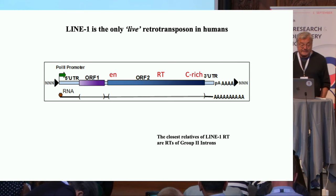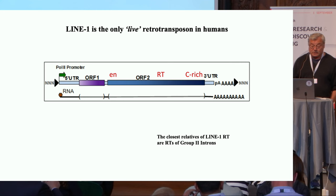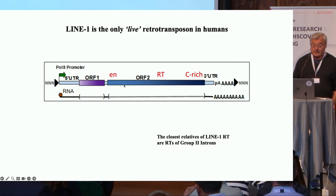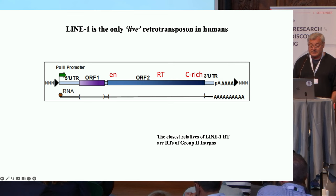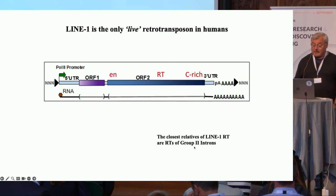This is a LINE element. It doesn't have any LTRs and only encodes two proteins. One of them, ORF-1, is an RNA chaperone. ORF-2 encodes the enzymatic machinery necessary for retrotransposition — the reverse transcriptase and the endonuclease. This is a very primitive element. The closest relatives sequence-wise of the LINE-1 reverse transcriptase are group two introns in archaebacteria.